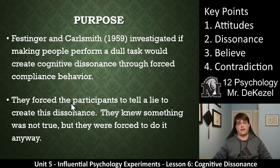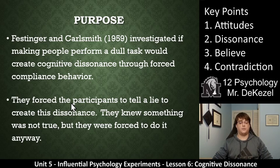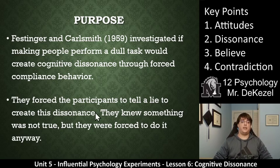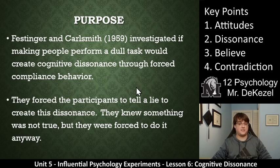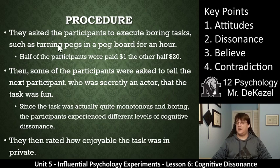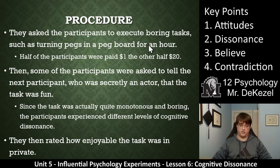Their action of telling someone that the task was fun, and then their actual belief about it — those were different. So they knew something was not true, but they were forced to do it anyway. Essentially, Festinger and Carlsmith made people perform this dull task, and then made them tell others that it was actually fun. They asked the participants to execute boring tasks, such as turning pegs in a pegboard for a whole hour.